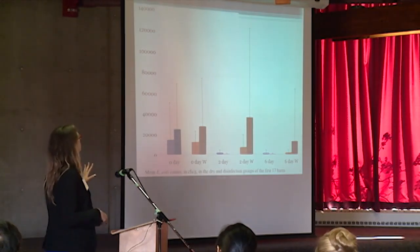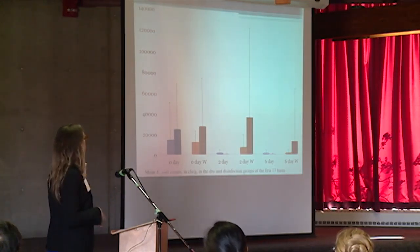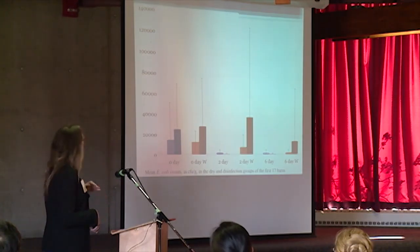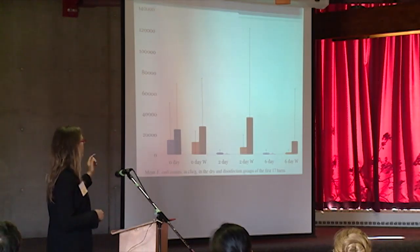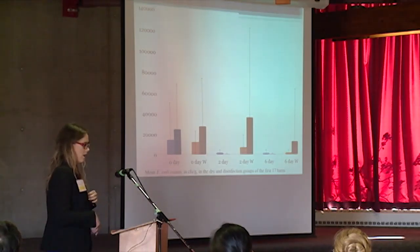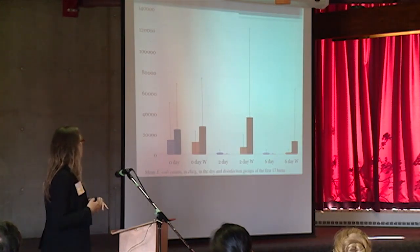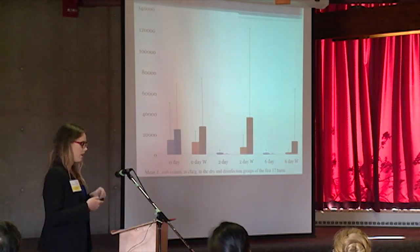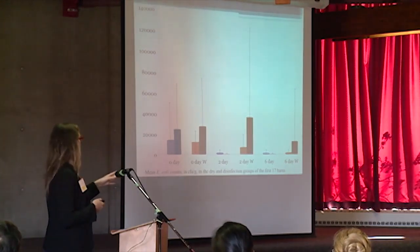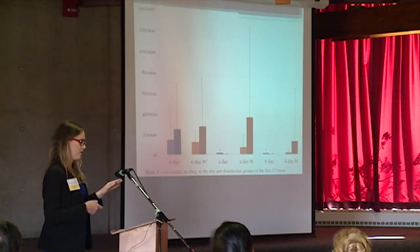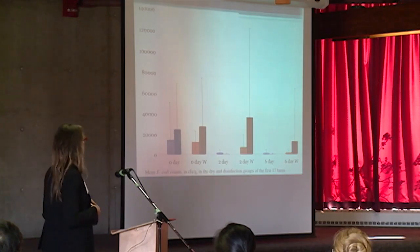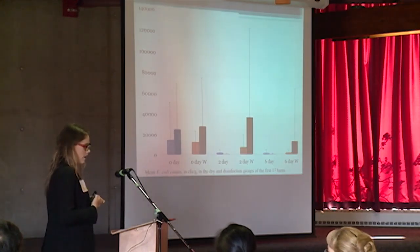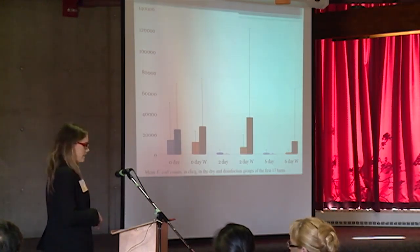To orient you on the graph: the y-axis is the average number of E. coli counts; the x-axis has the rest period, where zero day is our baseline, two day, and six day post-sanitation. The blue color represents the concrete floors and the brownish color represents the wooden floors. The lighter shade means dry cleaning and the darker shade means disinfection. Looking at the dry cleaning group, we can see there is a decrease in counts over time when compared to the initial baseline at zero days.